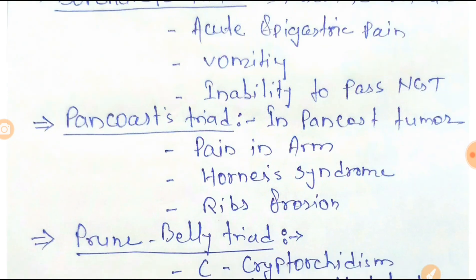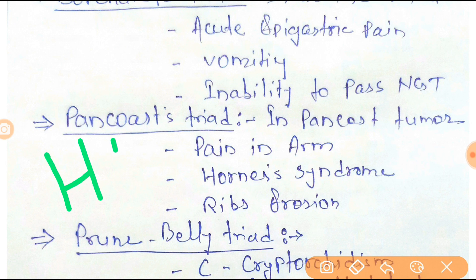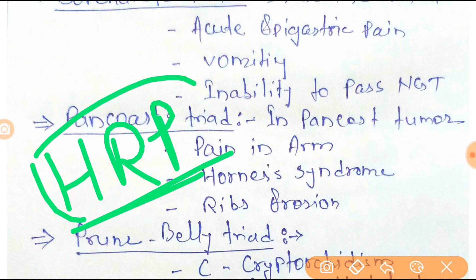Next one is Pancoast Triad, found in Pancoast tumor. The triad is pain in the arm, Horner syndrome, and rib erosion. You can easily remember it by the trick HRP — Horner syndrome, Rib erosion, Pain in the arm — like high resolution protein.